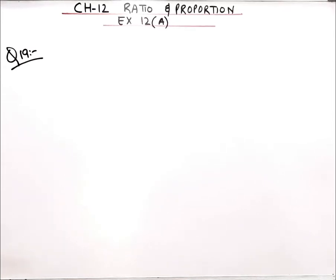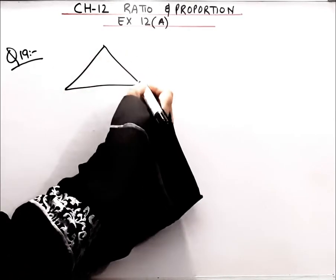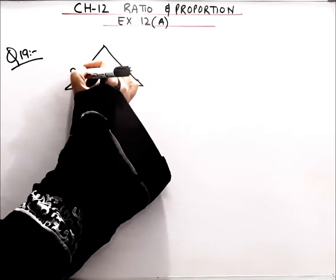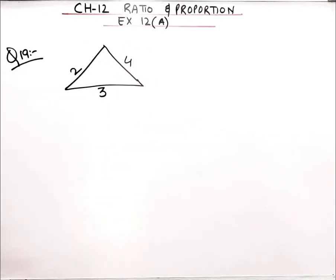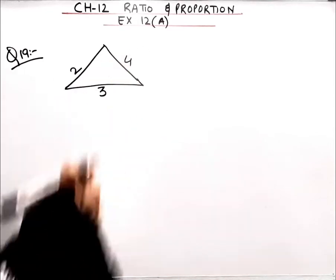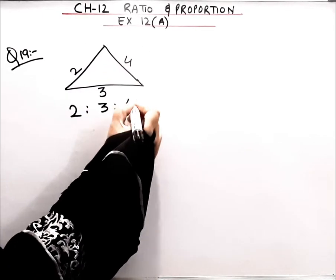Hello everybody, welcome to Brain Solution. Today we'll be doing question number 19 from exercise 12A. Question 19: the sides of a triangle are in the ratio 2:3:4. So the triangle has three sides in the ratio 2:3:4 — that is, 2 cm, 3 cm, and 4 cm.